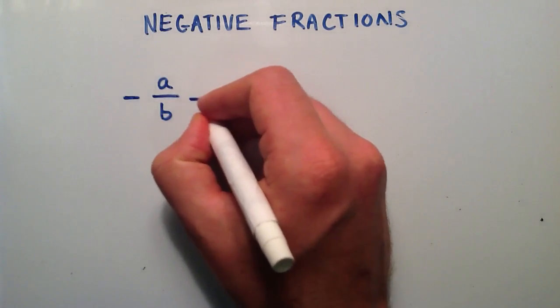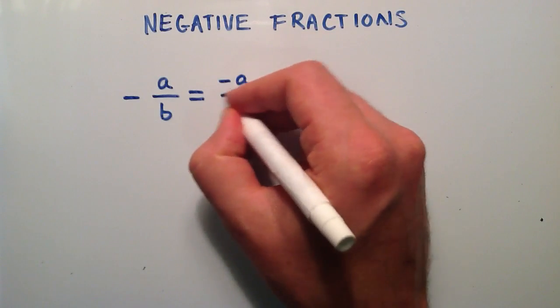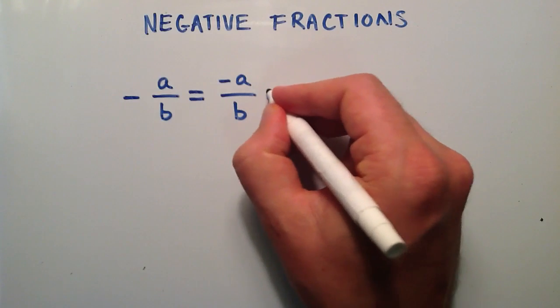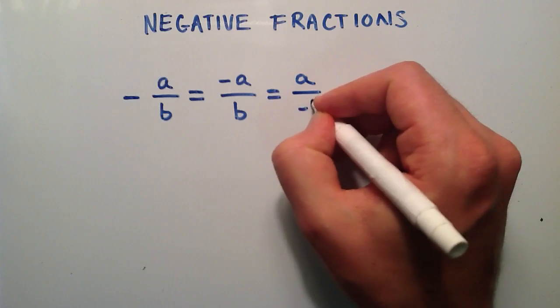The other thing that we can say is, well that is equal to negative a divided by a positive b. And the third way we can write this is, this is a positive a divided by a negative b.